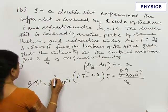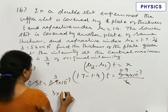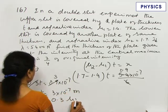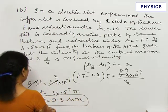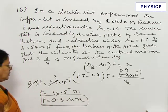Canceling, t equals 3 × 10⁻⁷ meter or 0.3 micrometer. So, the thickness of the plate that is introduced is 0.3 micron.